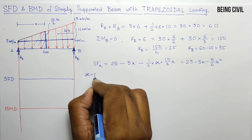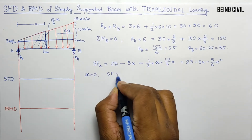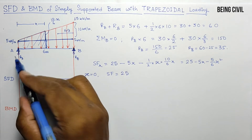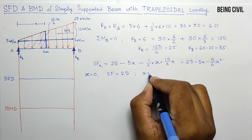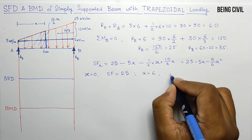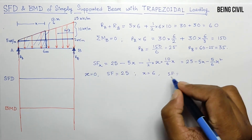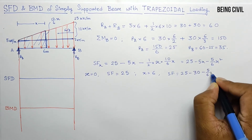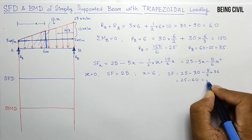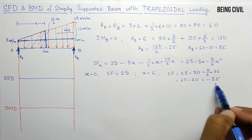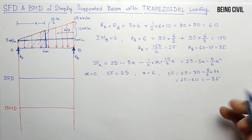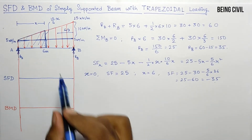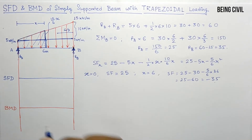Putting x = 0 gives a shear force of 25 kN, which is Ra. At x = 6, the shear force equals −35 kN, which is −Rb.